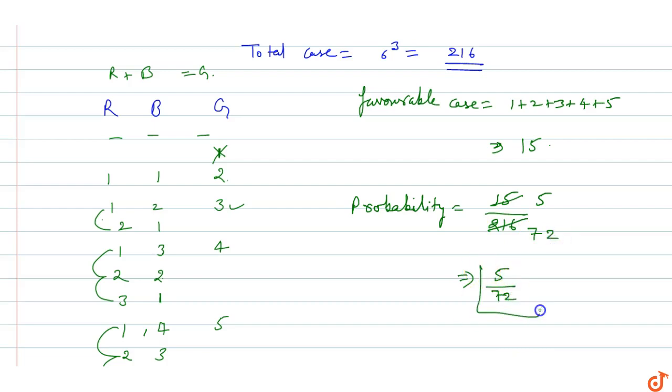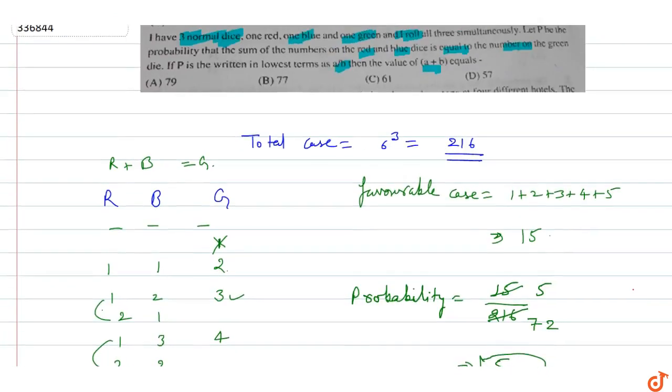In lowest form 5/72, we have a = 5 and b = 72.